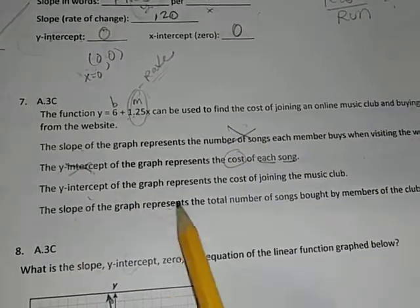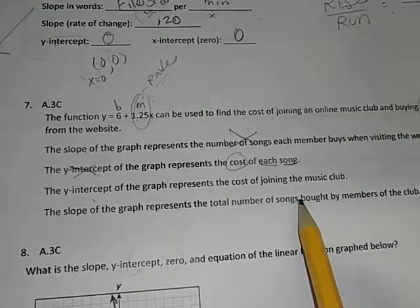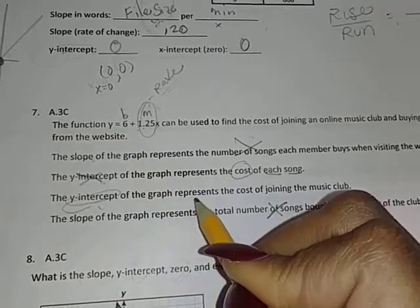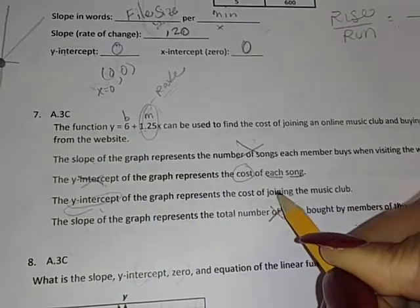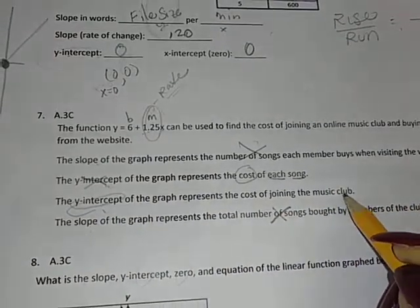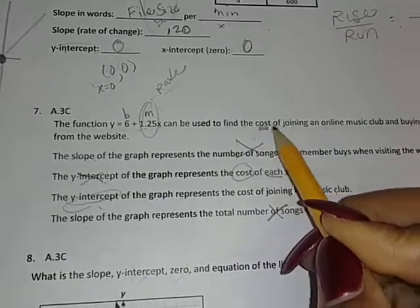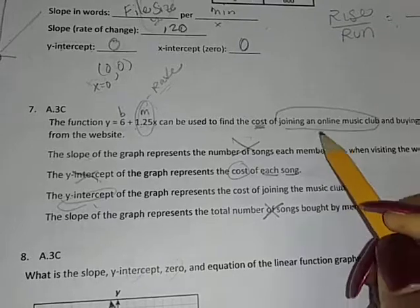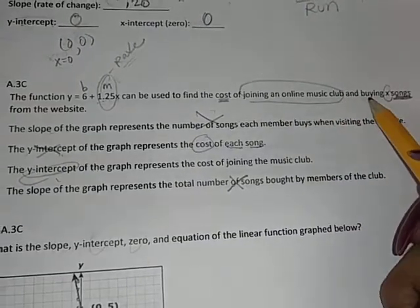What? The cost of joining the music club. And how do we know that? It says right here: cost of joining the music club plus the songs represents this function. So this is the initial cost.